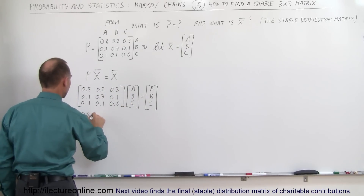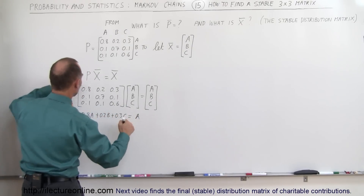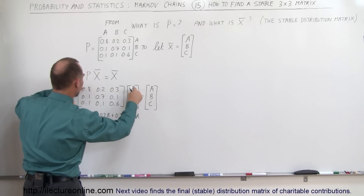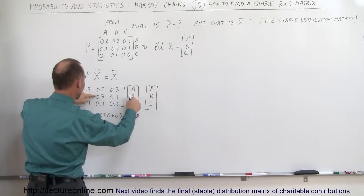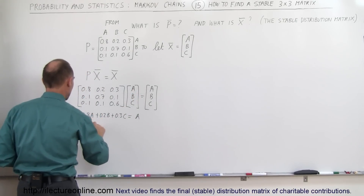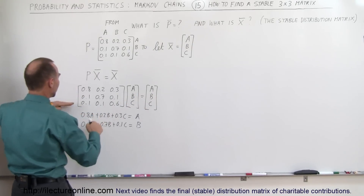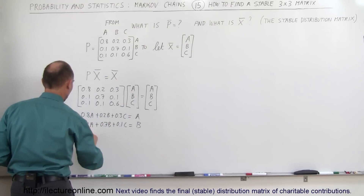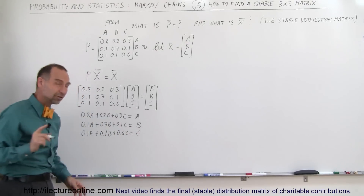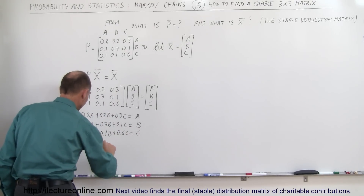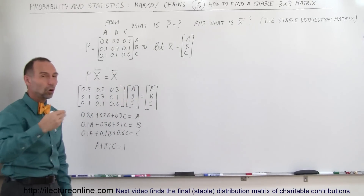We have 0.8A + 0.2B + 0.3C = A from the first row. Taking the second row: 0.1A + 0.7B + 0.1C = B. And from the third row: 0.1A + 0.1B + 0.6C = C. We also know that A + B + C = 1, because the values in the vertical direction must always add up to 1.